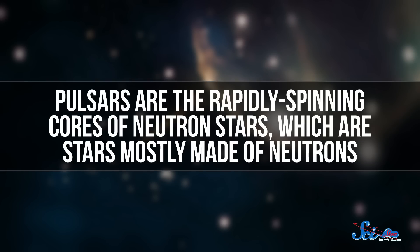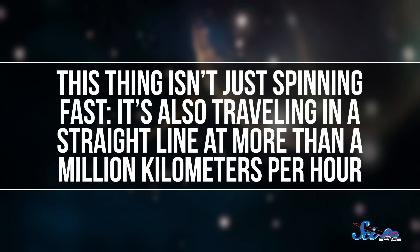Pulsars are rapidly spinning cores of neutron stars, which are stars mostly made of neutrons. But this thing isn't just spinning fast. It's also traveling in a straight line at more than a million kilometers per hour.